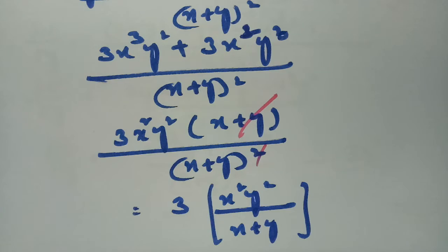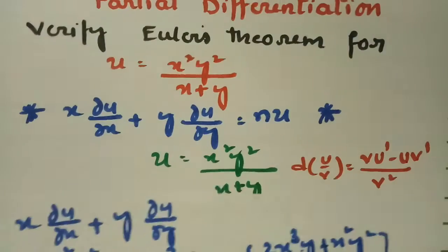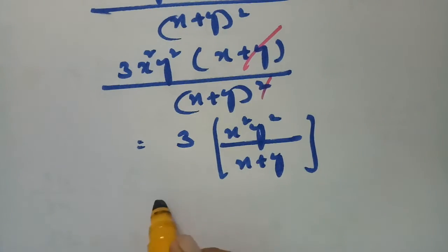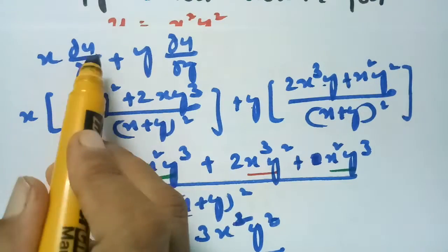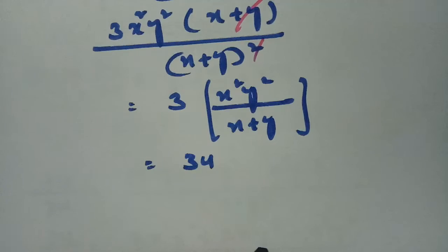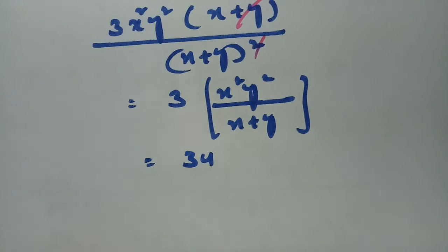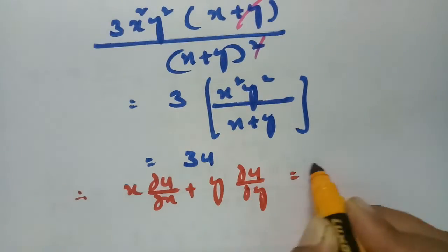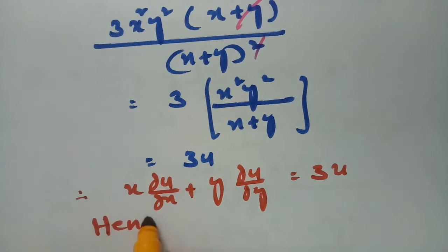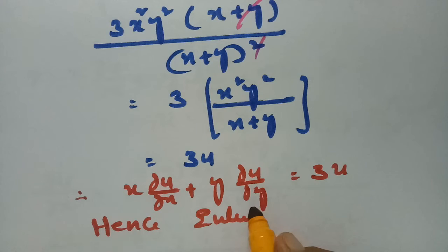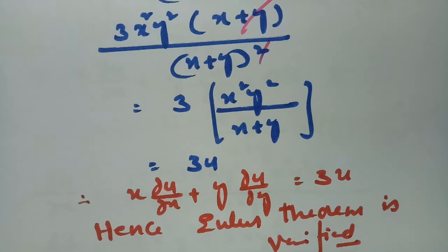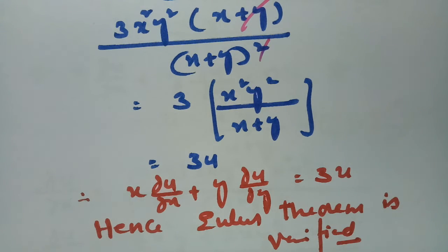Now x²y² divided by (x+y) is nothing but u from the original question. So this value is 3u. Therefore x into ∂u/∂x plus y into ∂u/∂y equals 3 into u. Hence Euler's theorem is verified. Please follow my next video too — thank you so much.